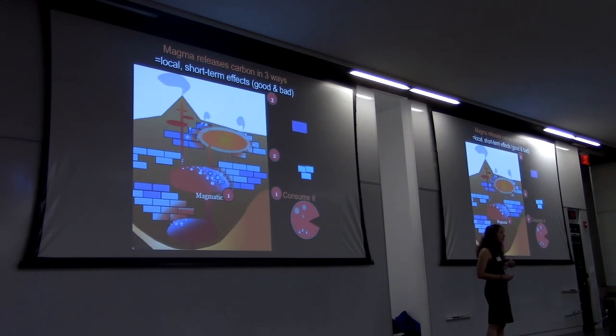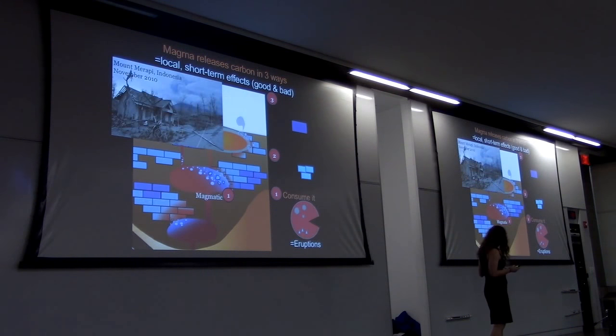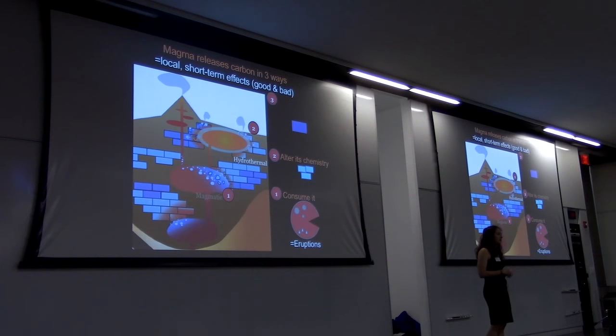The first is it consumes it like Pac-Man, and this releases bubbles. Unfortunately, more bubbles means a more violent eruption. So for example, this happened at Mount Merapi and killed over 400 people in 2010.